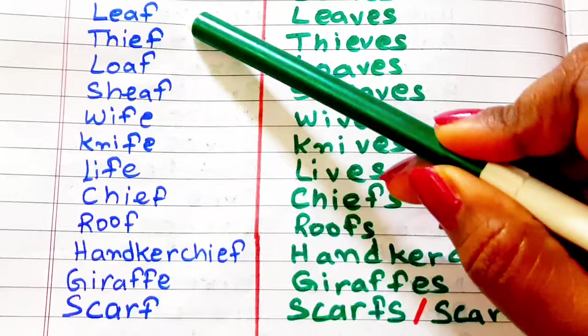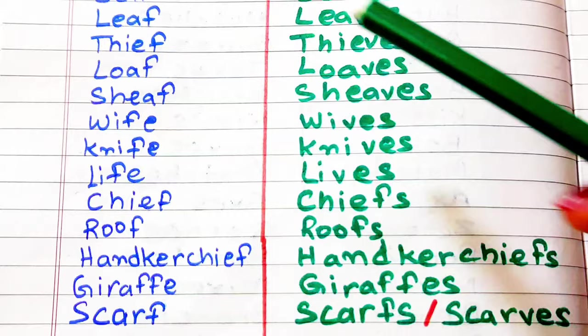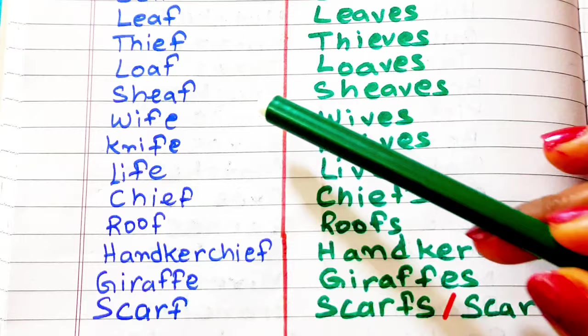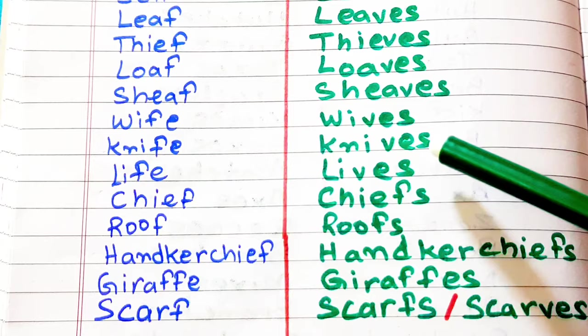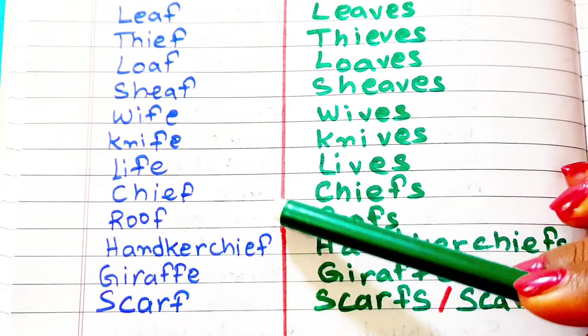Leaf, leaves. Thief, thieves. Loaf, loaves. Chef, chefs. Wife, wives. Knife, knives. Life, lives.